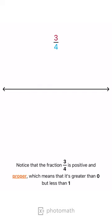Notice that the fraction 3 quarters is positive and proper, which means that it's greater than 0 but less than 1.